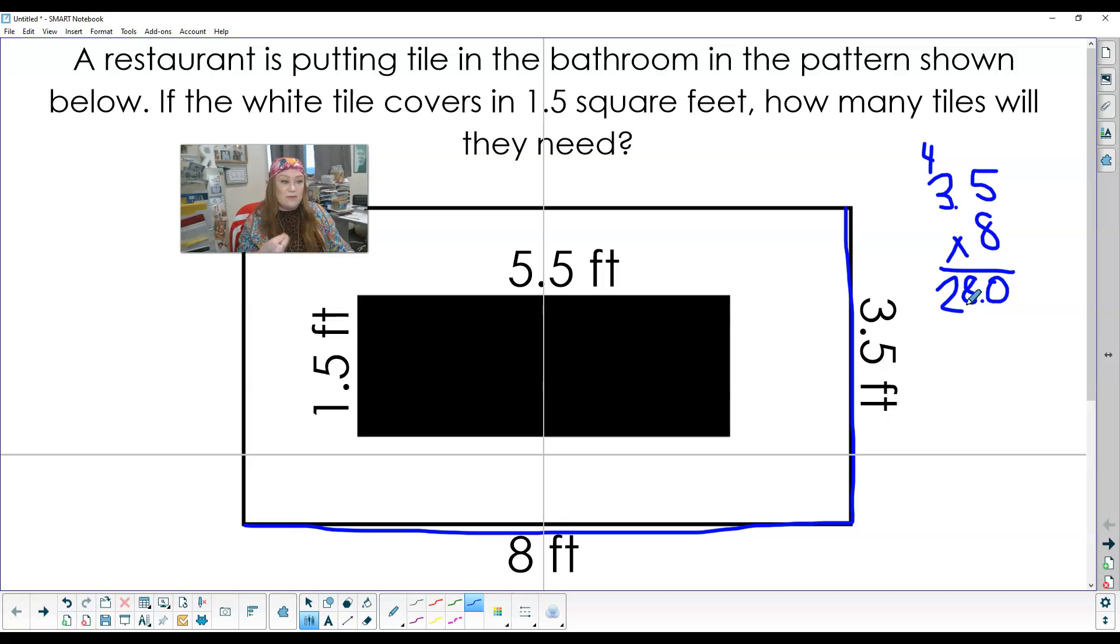So that whole bathroom is 28 square feet. Now my black part of the tile covers base times height is 5.5 by 1.5. And as an estimate, this is about 1 by 5.5, so it should be close to 5, a little bit more than 5.